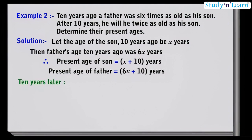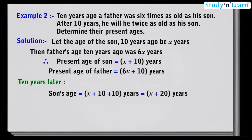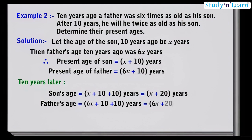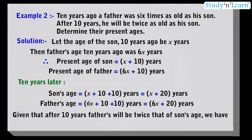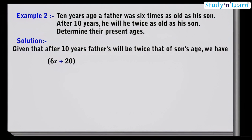10 years later, the age of son and father will be obtained by adding 10 years to their present ages. So, son's age will be x plus 10 plus 10 years, that is x plus 20 years, and father's age will be 6x plus 10 plus 10 years, that is 6x plus 20 years. Given that after 10 years, father will be twice that of son's age, we have 6x plus 20 is equal to twice of x plus 20.